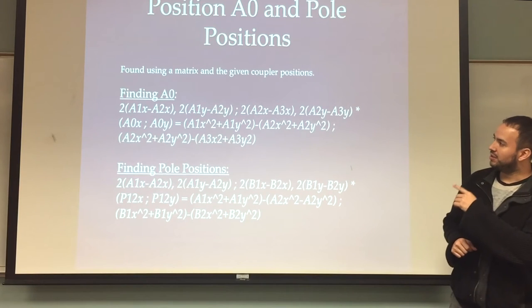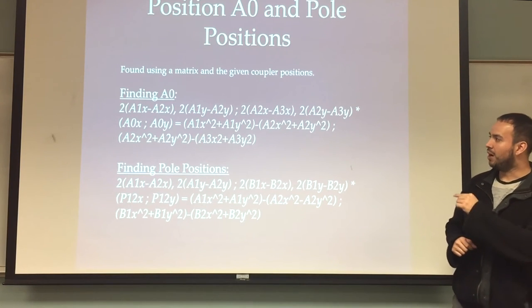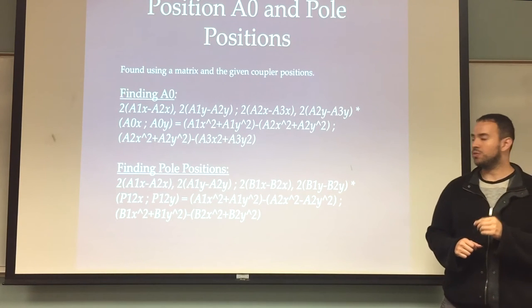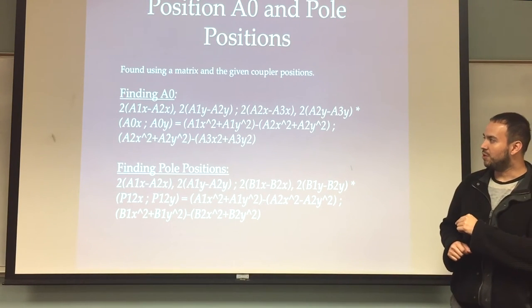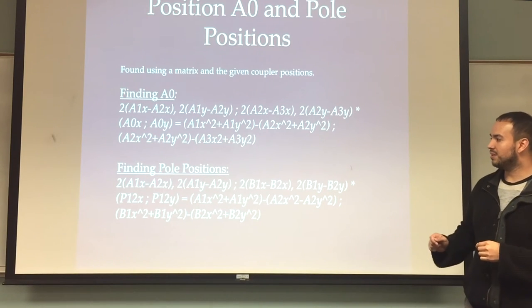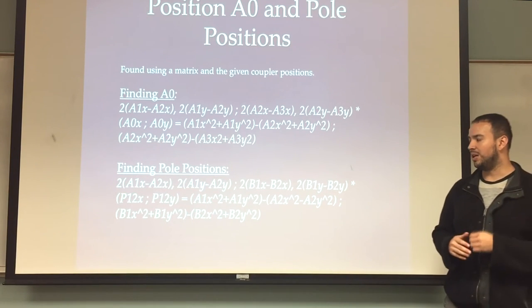In order to find the A0 actual position here, we're going to use this matrix. This matrix is in MATLAB format. The commas represent different columns. The semicolons represent rows. So this is the actual matrix that we used to solve this.